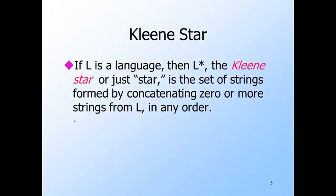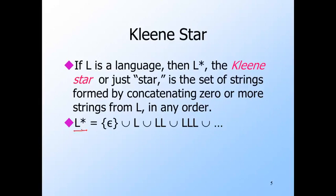If L is a language, then L star, the Kleene star or star operator, is the set of strings formed by concatenating zero or more strings from L in any order. Thus, L star consists of the set containing the empty string — the empty string is always in the star of any language, representing no choices of string from L — union with L itself, then L concatenated with L for two strings, then three strings, and so on. Anything you can form by concatenating any number of strings from L will be in L star.